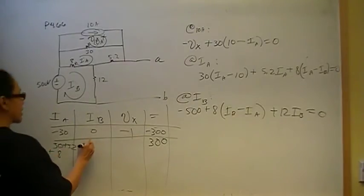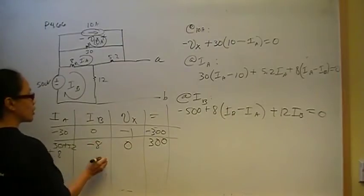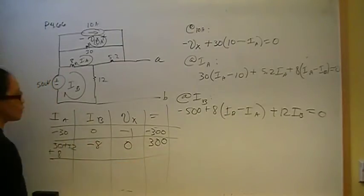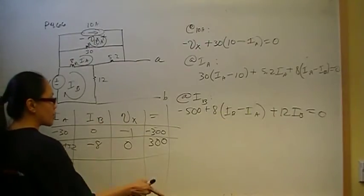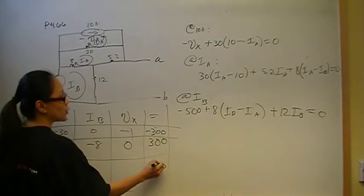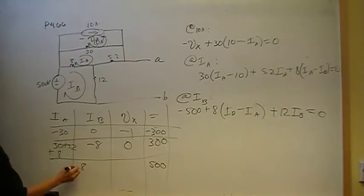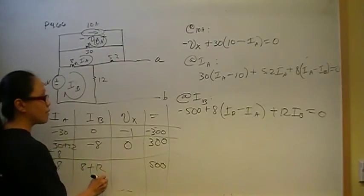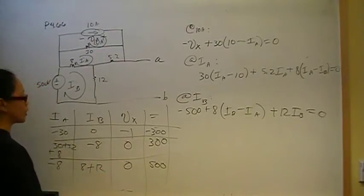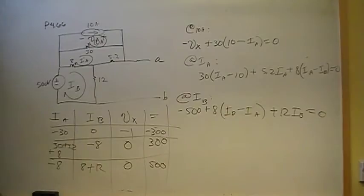And then here we have negative 8 for I-B and no occurrences of Vx. Our final equation is negative 500, which will go on the other side as positive 500. And then we have 8 for I-B and then negative 8 for I-A and 12, positive 12. And then for I-B and zero occurrences of Vx.